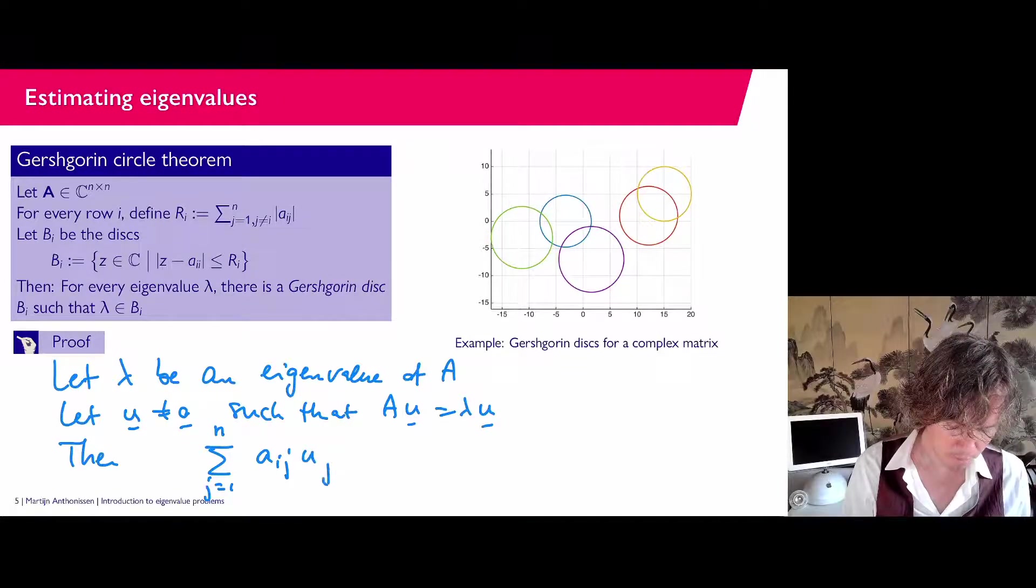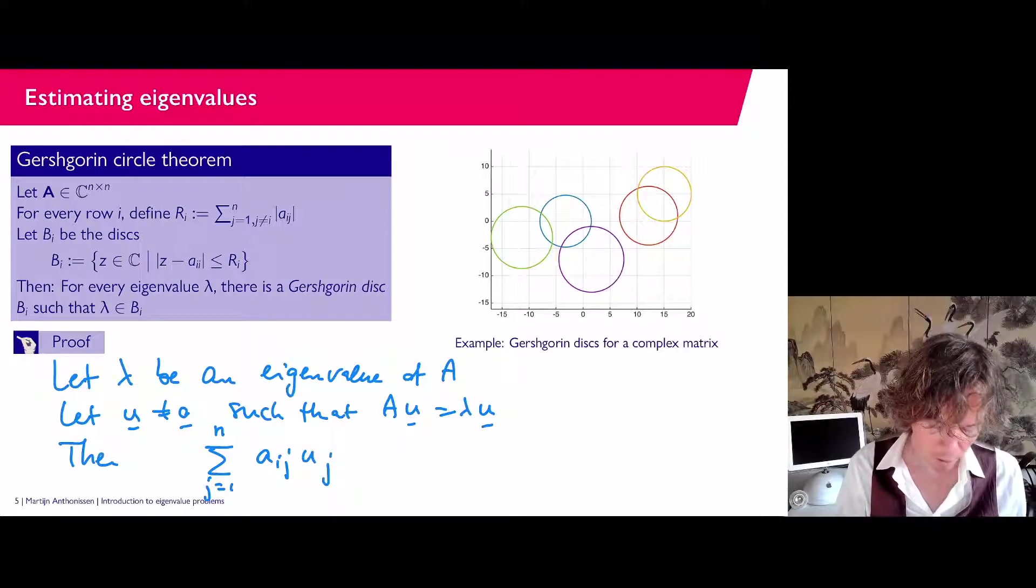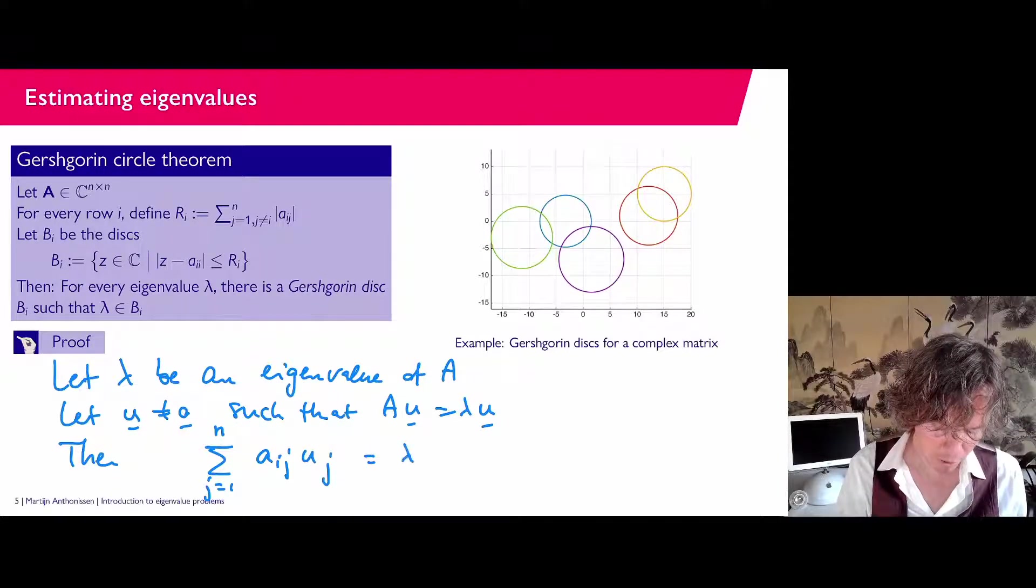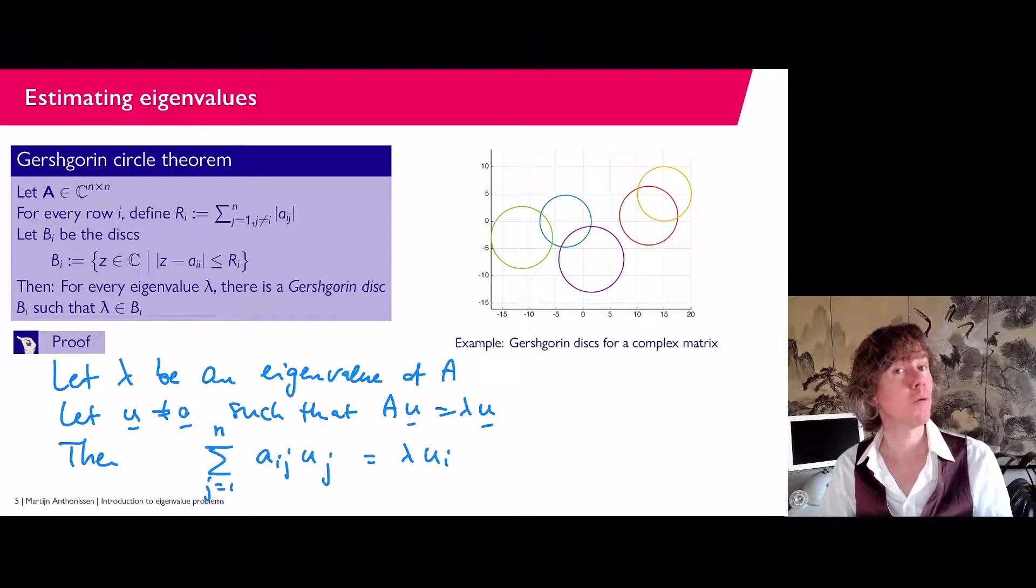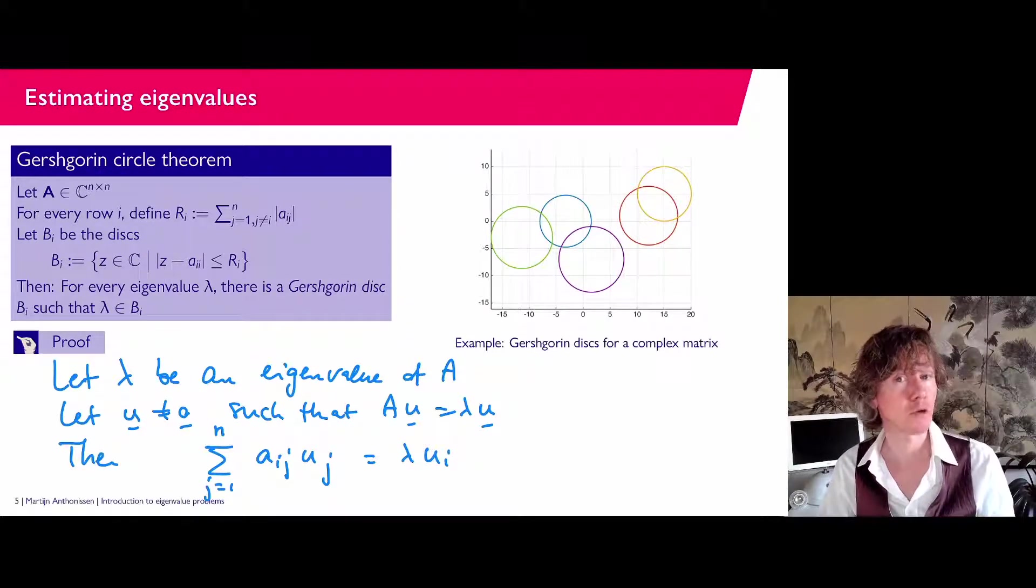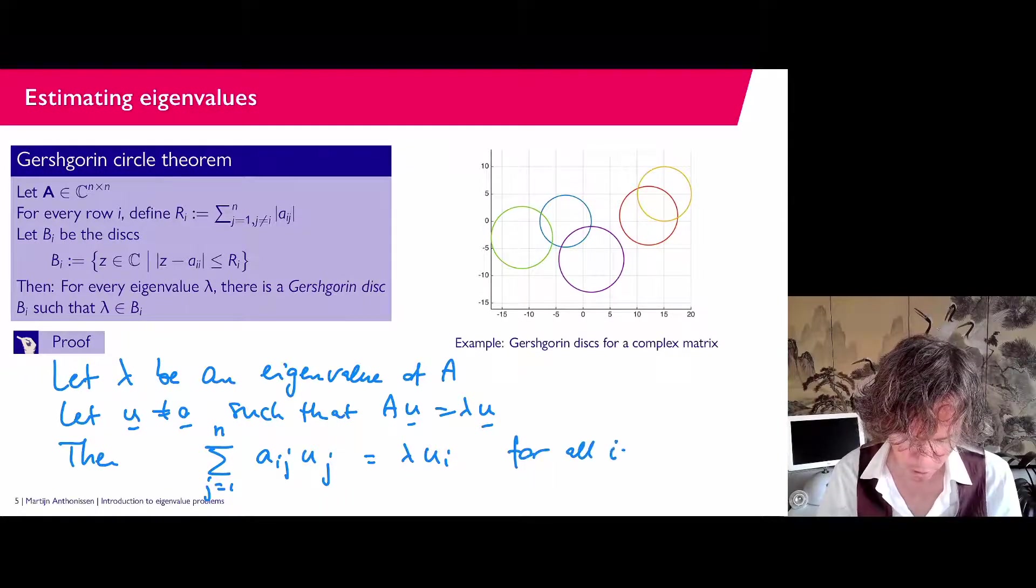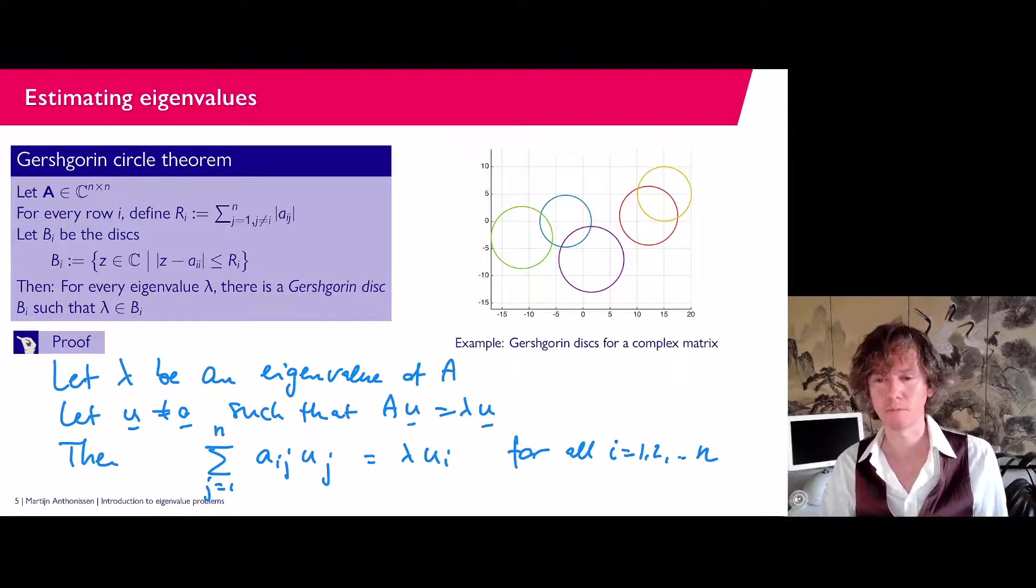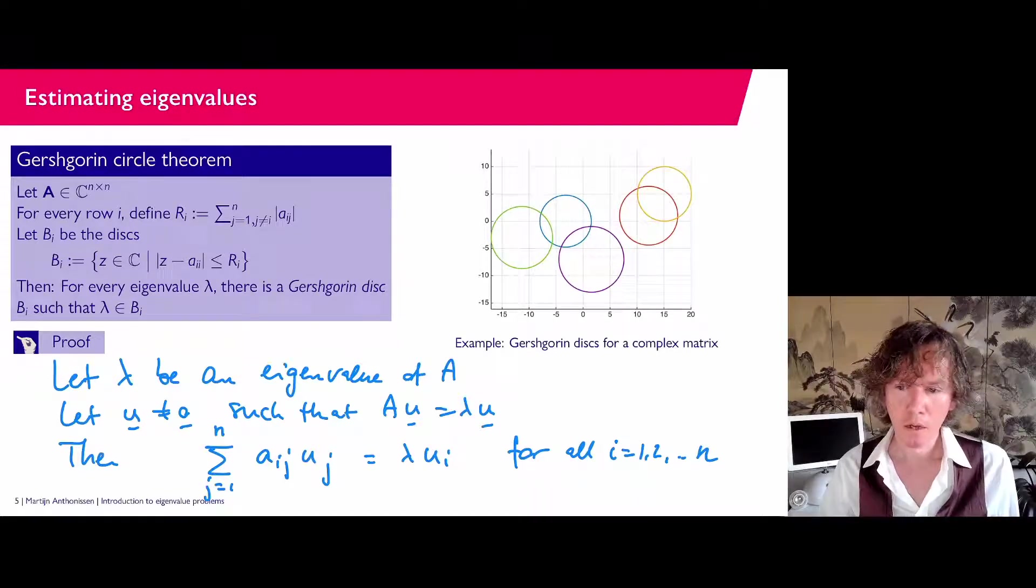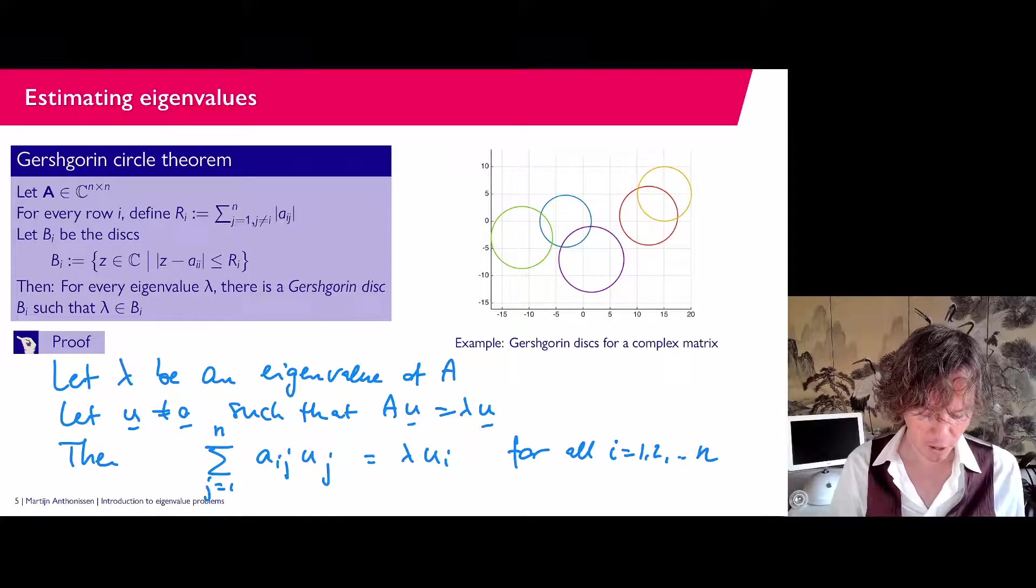So this is component i of the vector A times U. And on the right hand side, we have λU_i. And that should hold for every component because the two vectors are the same. Every component needs to be the same. So for all i is 1, 2 up to n.